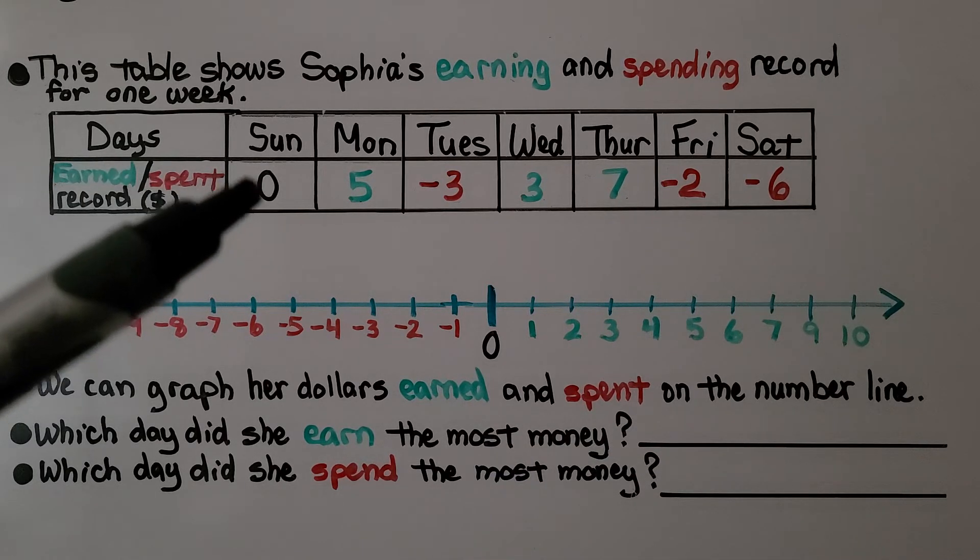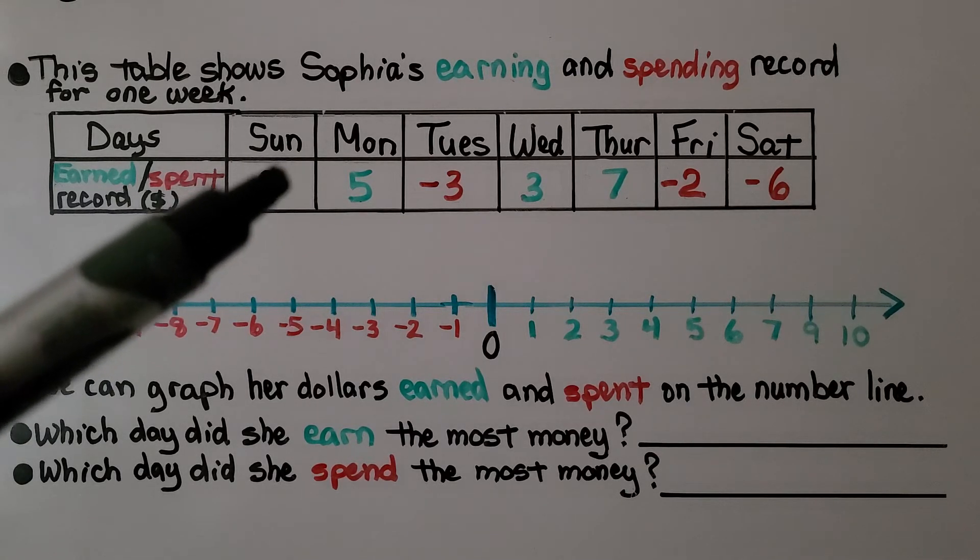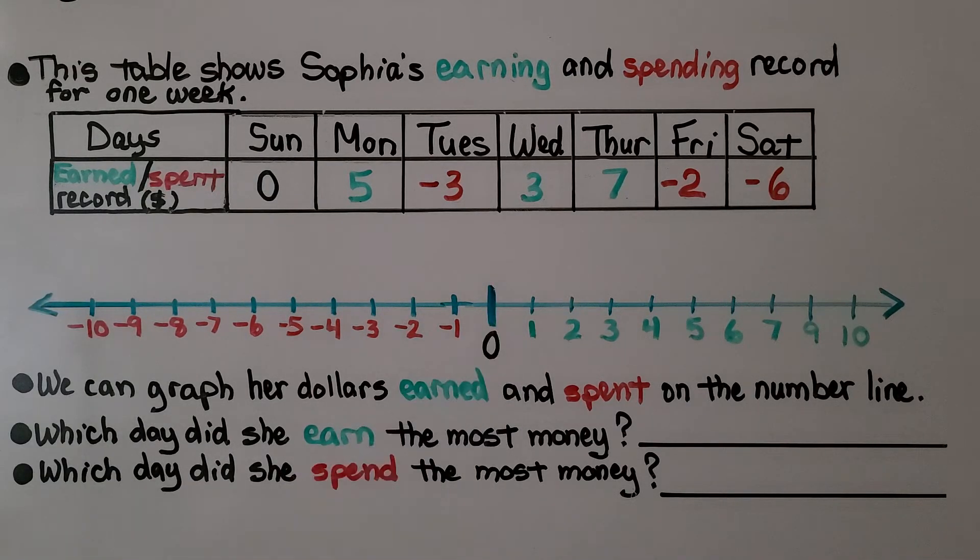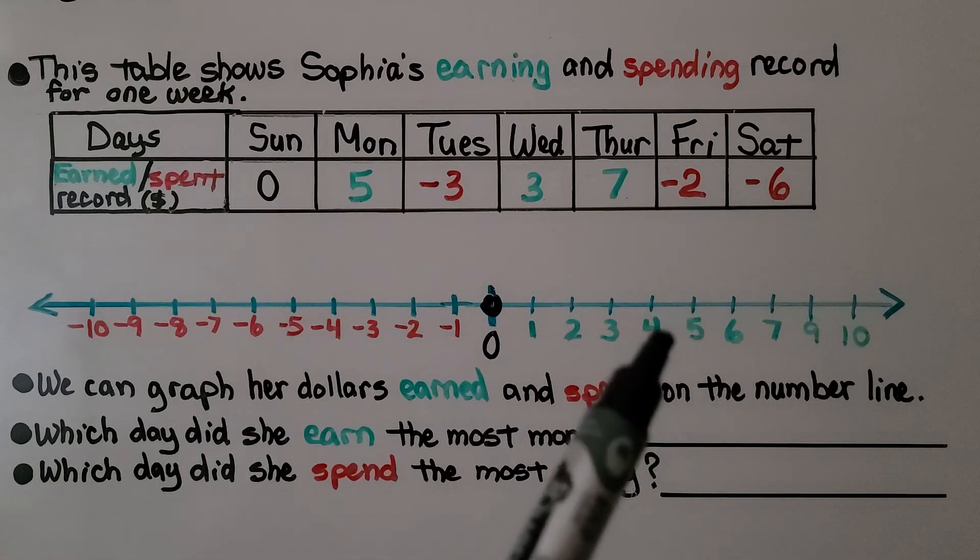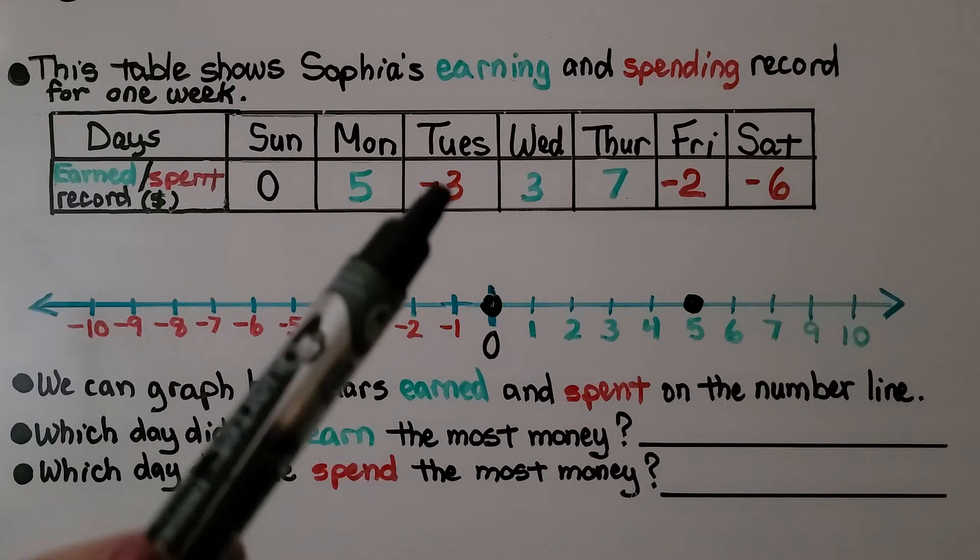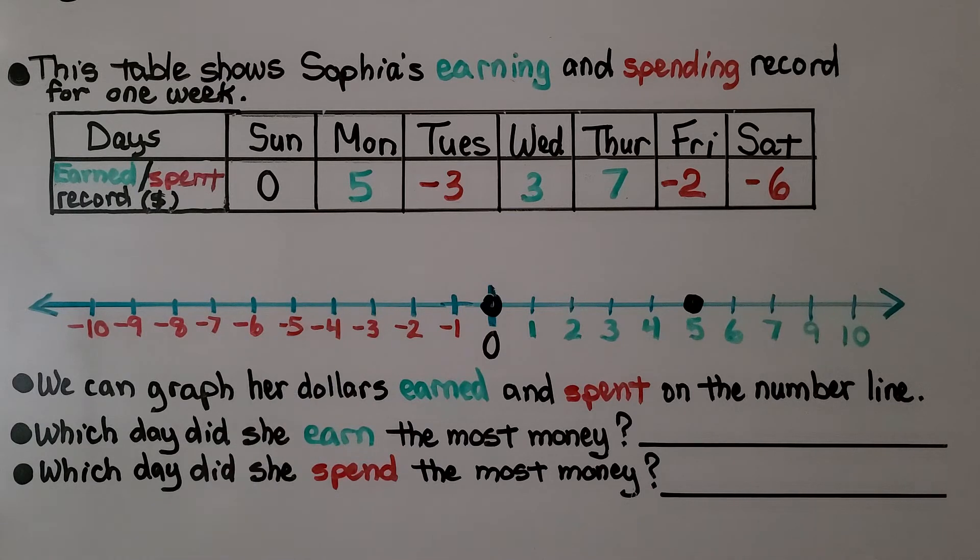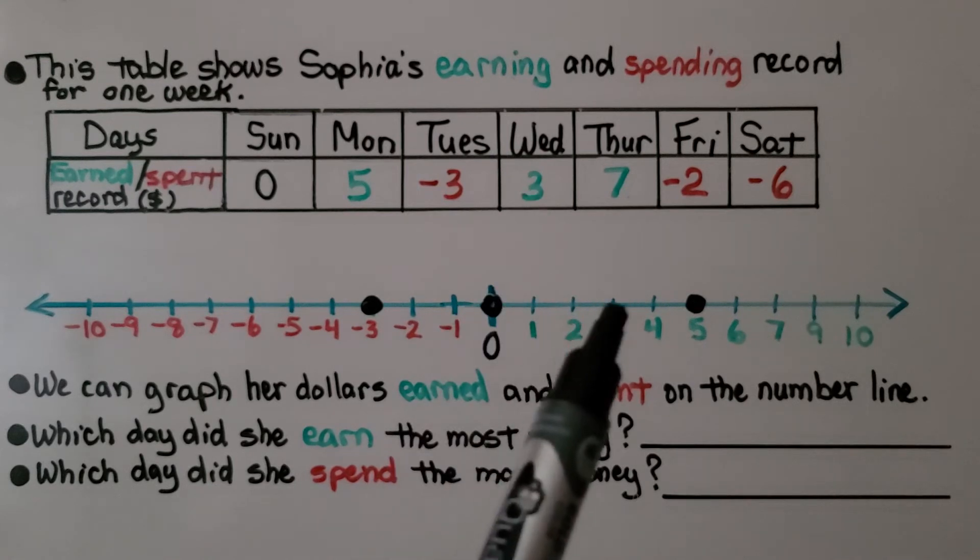On Sunday, she didn't earn or spend any money. She has a 0. We can graph the 0. On Monday, she earned $5, a positive 5. We graph it there. Tuesday, she has negative 3. That means she spent $3. Wednesday, it's a positive 3. That means she earned $3. We can plot that.